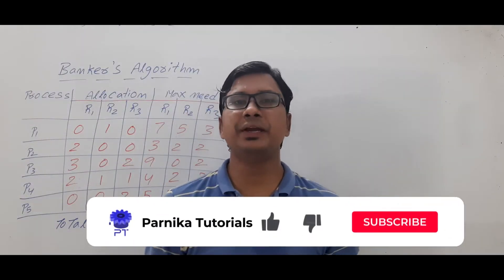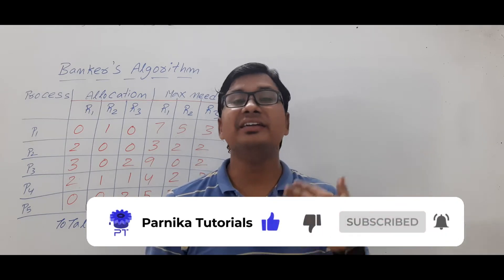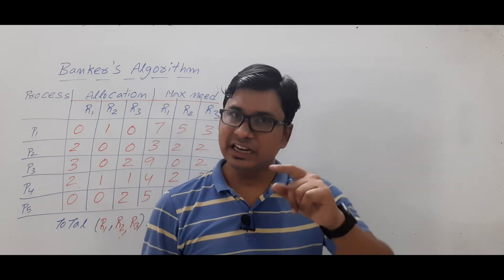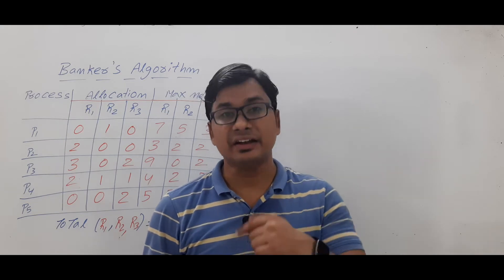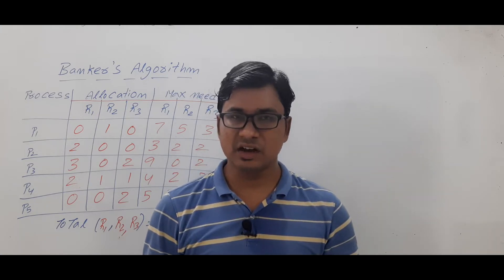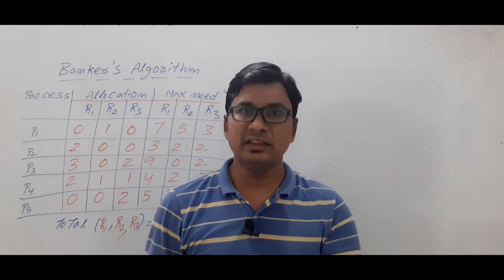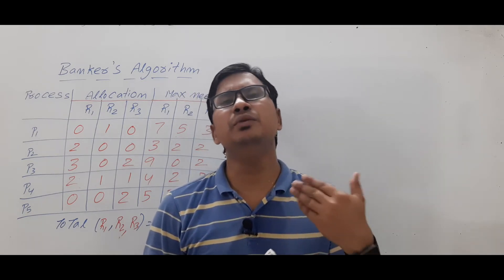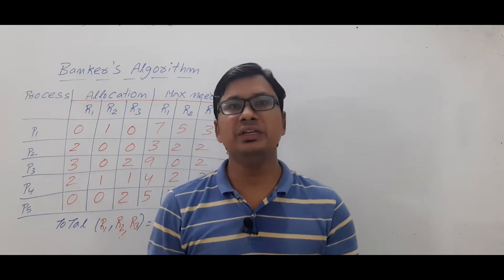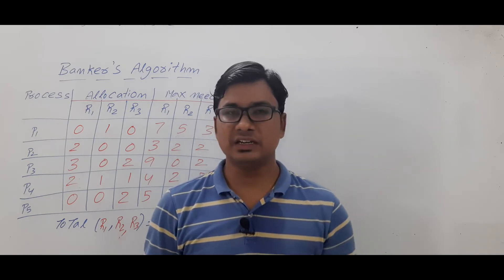Good morning friends, welcome back to Parnika Tutorials. In the last few videos I discussed the strategies in handling deadlock: deadlock ignorance, deadlock prevention, deadlock avoidance, and deadlock detection and recovery. There are four necessary conditions for deadlock: mutual exclusion, circular wait, hold and wait, and no preemption. If we can disable any one of the necessary conditions, deadlock will not happen — that is deadlock prevention.